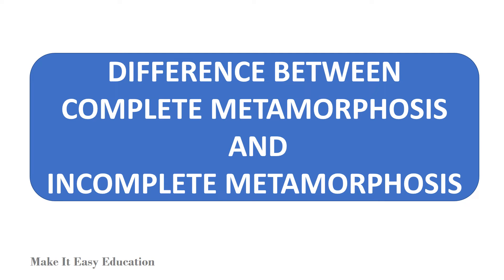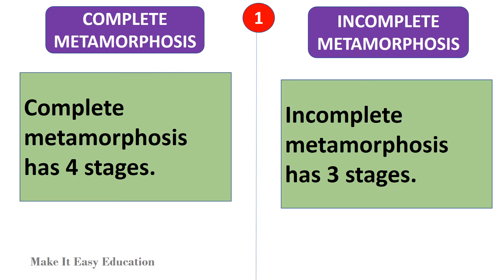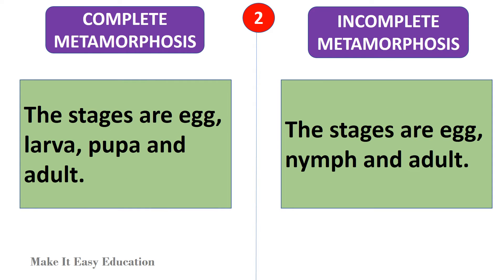Differences between complete metamorphosis and incomplete metamorphosis. Complete metamorphosis has four stages, while incomplete metamorphosis has three stages. In complete metamorphosis the stages are egg, larva, pupa, and adult. In incomplete metamorphosis the stages are egg, nymph, and adult.